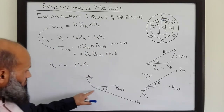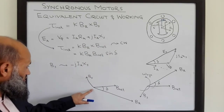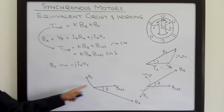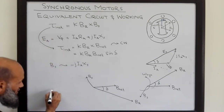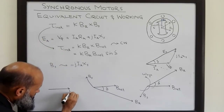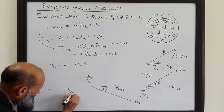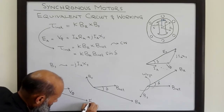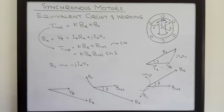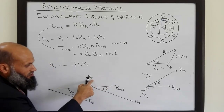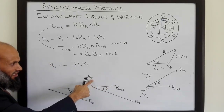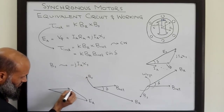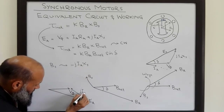We can also draw the equivalent phasor diagram of electrical quantities corresponding to this motor situation. We have V_phase and EA, and this produces jIAXS.